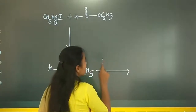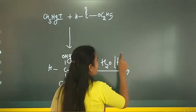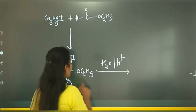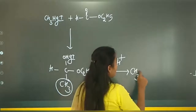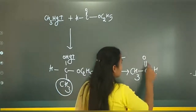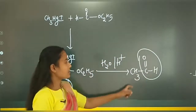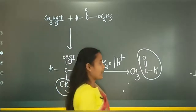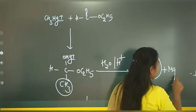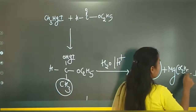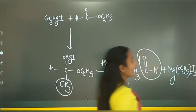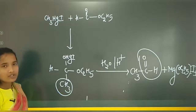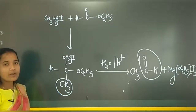On hydrolysis, the intermediate gives the aldehyde product — R-C(=O)-H, where R is CH3, so this is methyl aldehyde, also known as formaldehyde. The remaining by-product is Mg(OC2H5)I. This demonstrates the preparation of aldehyde using methyl magnesium iodide.